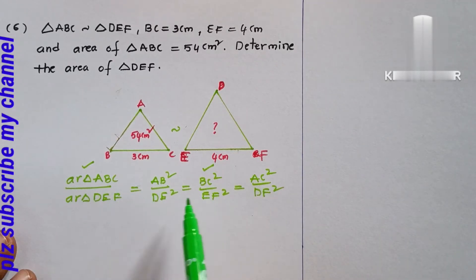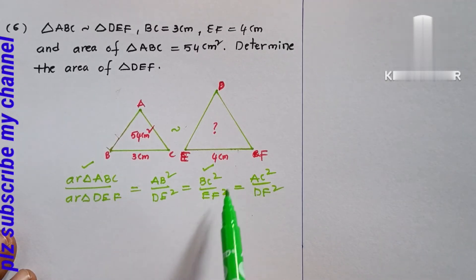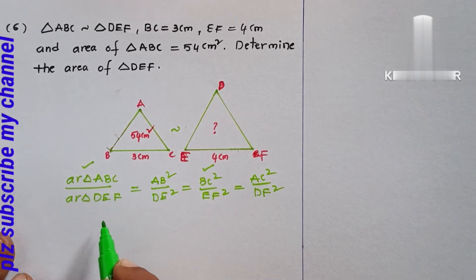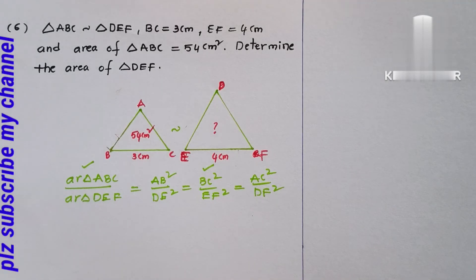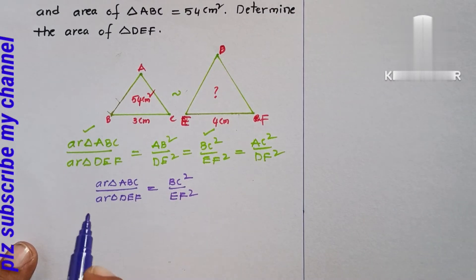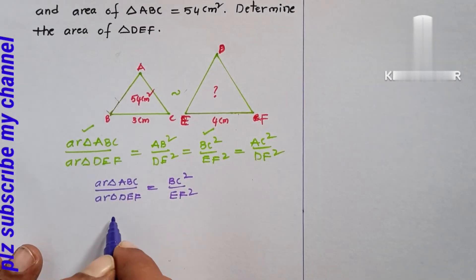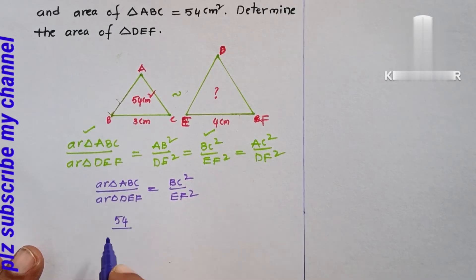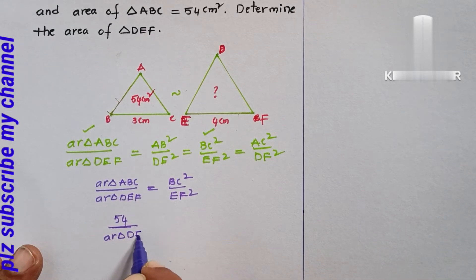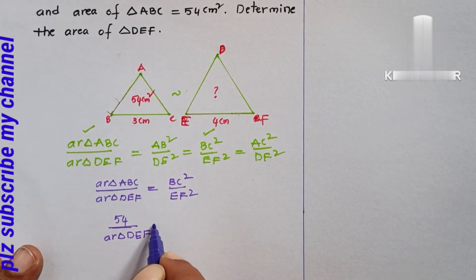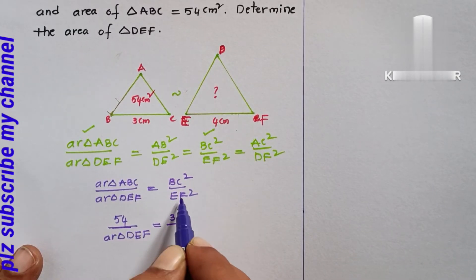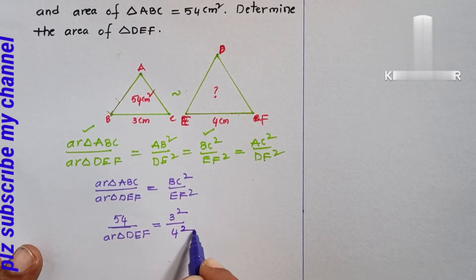We are given BC and EF, so we use those sides to find the area. Area of triangle ABC over area of triangle DEF equals BC squared over EF squared. That is 54 over Area(DEF) equals 3 squared over 4 squared, which is 9 over 16.